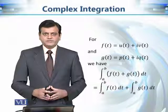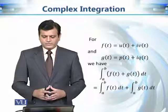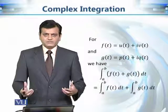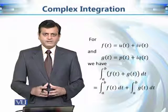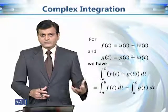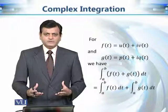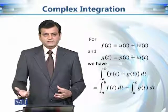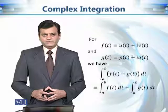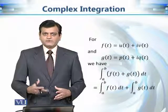Now, if we have two functions f(t) = u(t) + iv(t) and g(t) = p(t) + iq(t), and we want to integrate their sum, it is the same as integrating them separately and adding. This property is exactly the same as in calculus of one variable. The reason for this similarity is that we evaluate the complex integral using two real integrals — first integrating the real part, then the imaginary part.